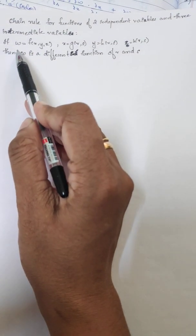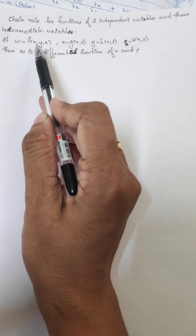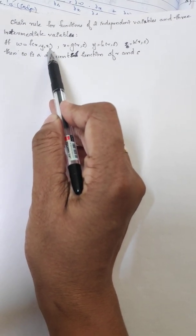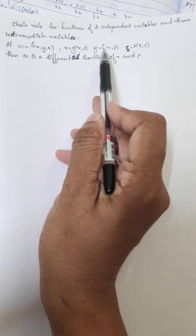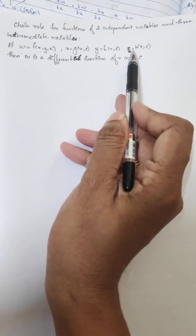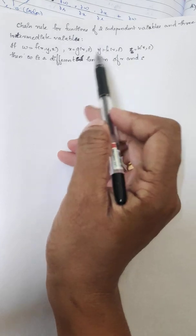Chain rule for functions of two independent variables and three intermediate variables. Suppose W is a function of X, Y, Z, where X is a function of two variables, Y is a function of two variables, and Z is a function of two variables.